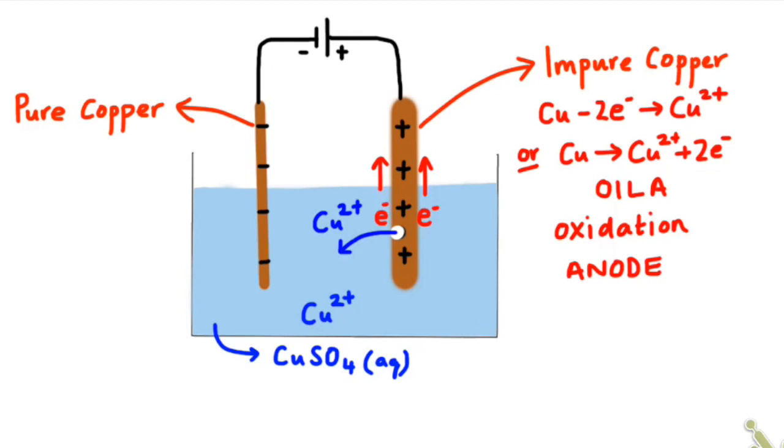If we focus now on the pure copper electrode, it's negative, so it attracts that Cu2+ ion across to itself. And at that pure copper electrode, the excess electrons, so the copper 2 plus ion will gain two electrons to form a copper atom.